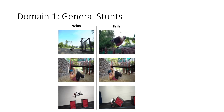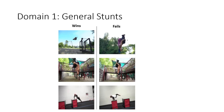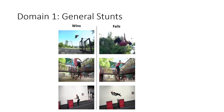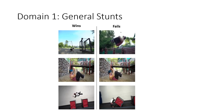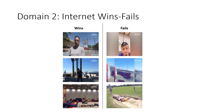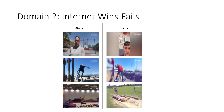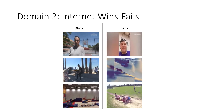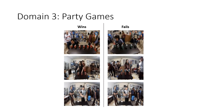Now let's take a look at some samples from each domain. The first domain is general stunts. For each win sample, we have curated the corresponding fail sample — in the wins column, the person is able to complete the stunt and land correctly, while not in the fails column. Wins vs. fails compilations are also quite popular on YouTube, so for our second domain we considered this kind of video. For our third domain, we curated samples from party games — in the wins column, players are able to complete the task while in the fails column they are not.